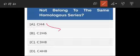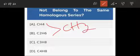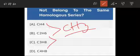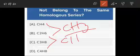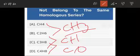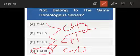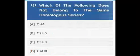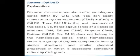The answer is option D. You can see: CH4 and C2H6 — difference is 1C and H2, so CH2 difference. C2H6 and C3H8 — 1C and H2, so CH2 difference. C3H8 and C4H10 — 1C and H2, so CH2 difference. But option D does not follow this pattern. You can understand easily: C3H8 plus CH2 gives C4H10, so option D is the correct answer as the odd one out.